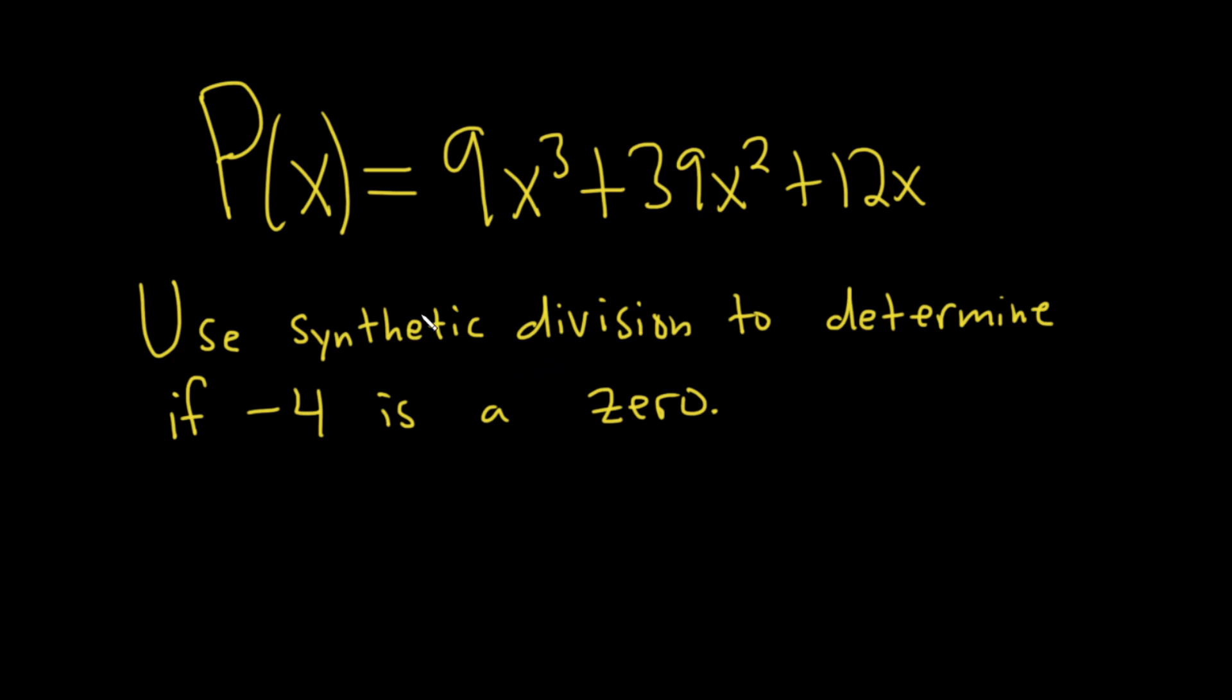Hello. In this problem, we're given a polynomial, P(x), and we're asked to use synthetic division to determine if negative 4 is a zero.